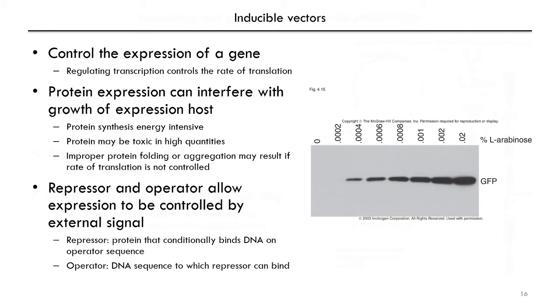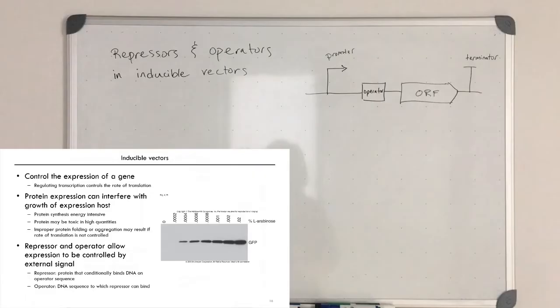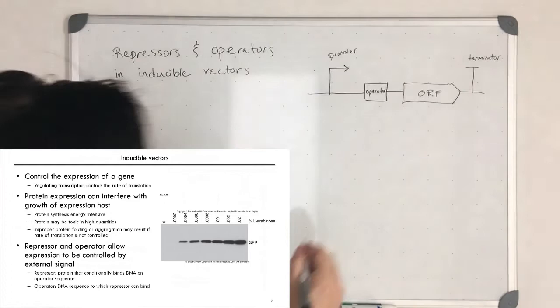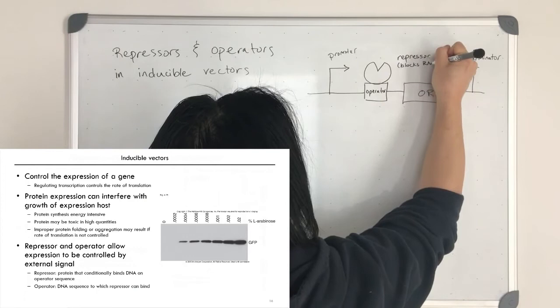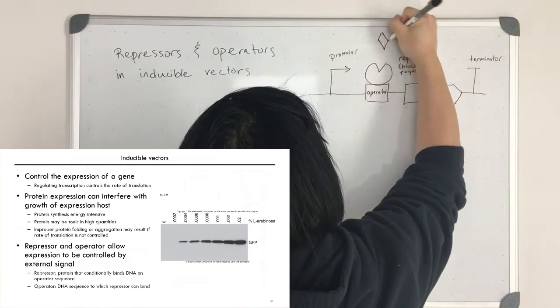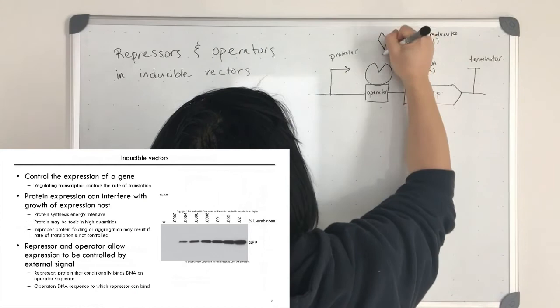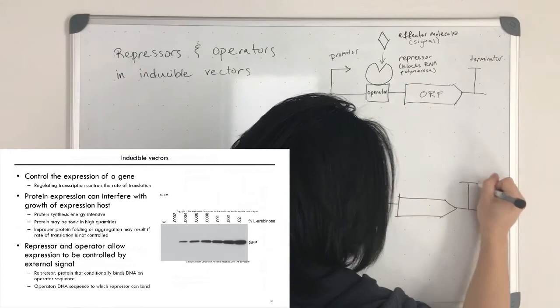Using a repressor and an operator, you can control the expression. A repressor is a protein that conditionally binds to DNA at the operator sequence. When the repressor binds, it will block transcription by RNA polymerase, unless some signal causes it to unbind. When a repressor binds a specific effector molecule — for example, arabinose in this case — the repressor comes off and stops blocking RNA polymerase from transcribing.